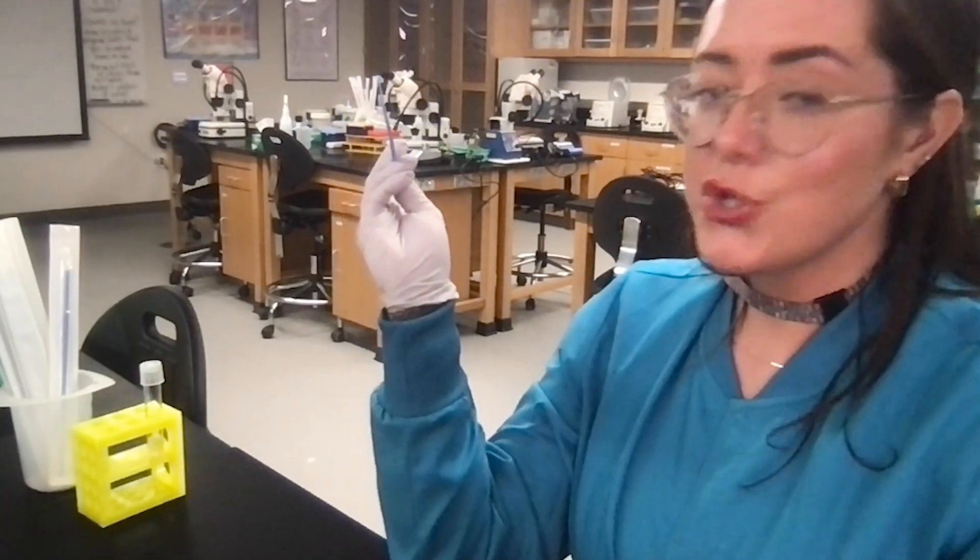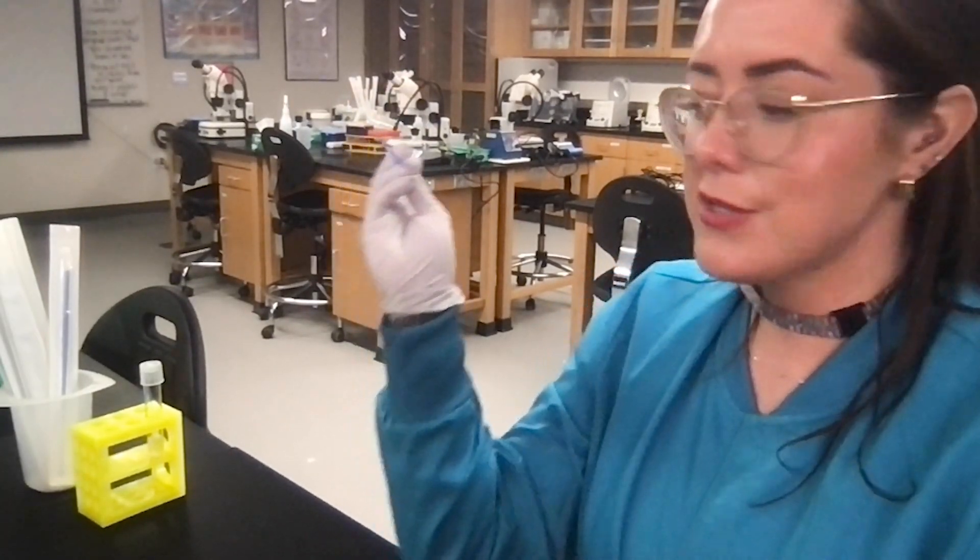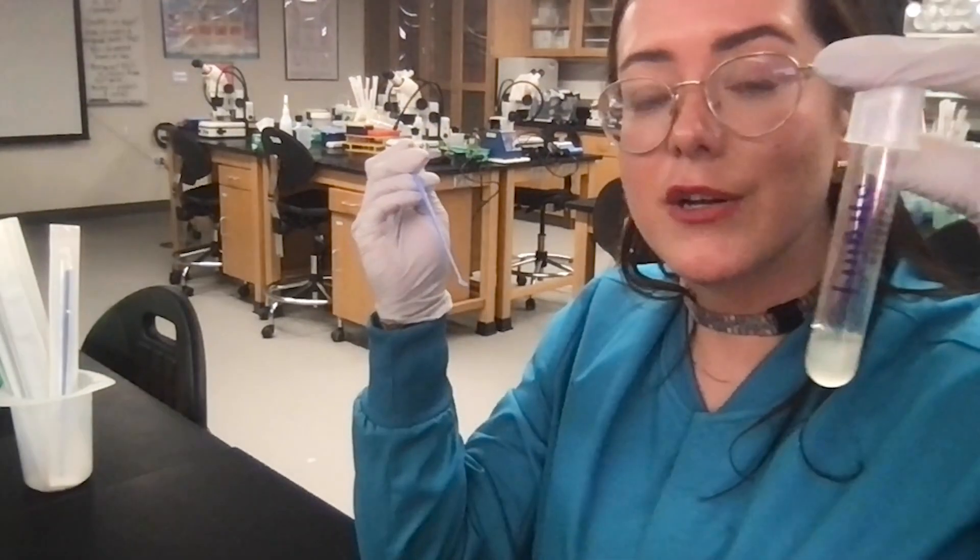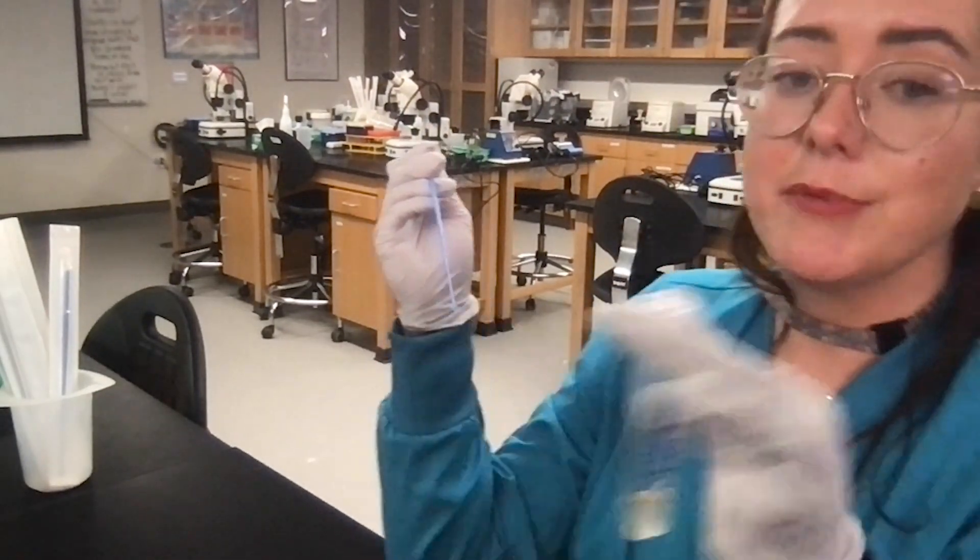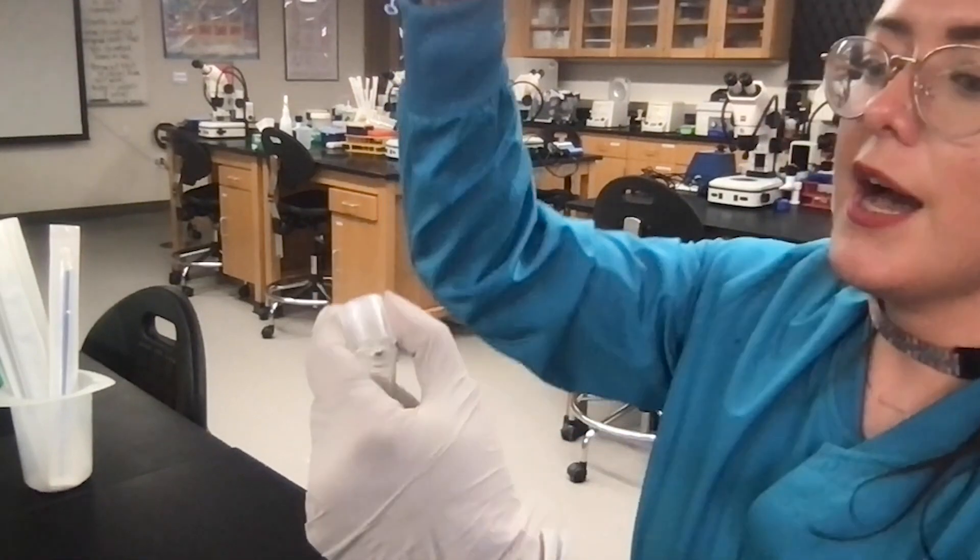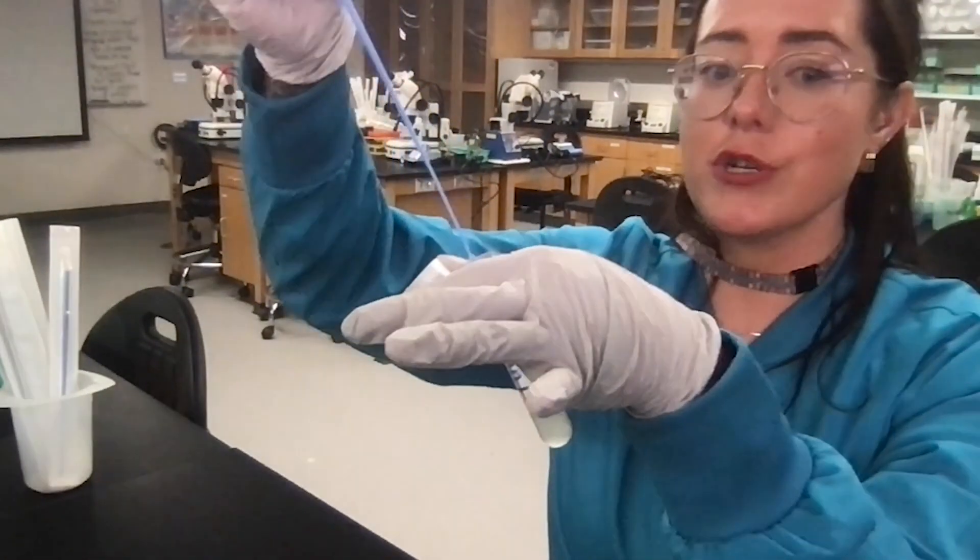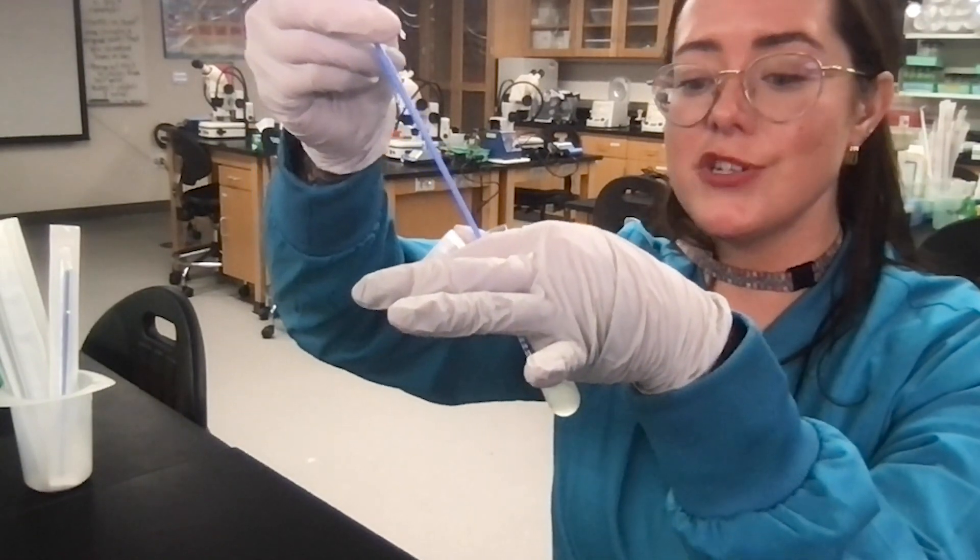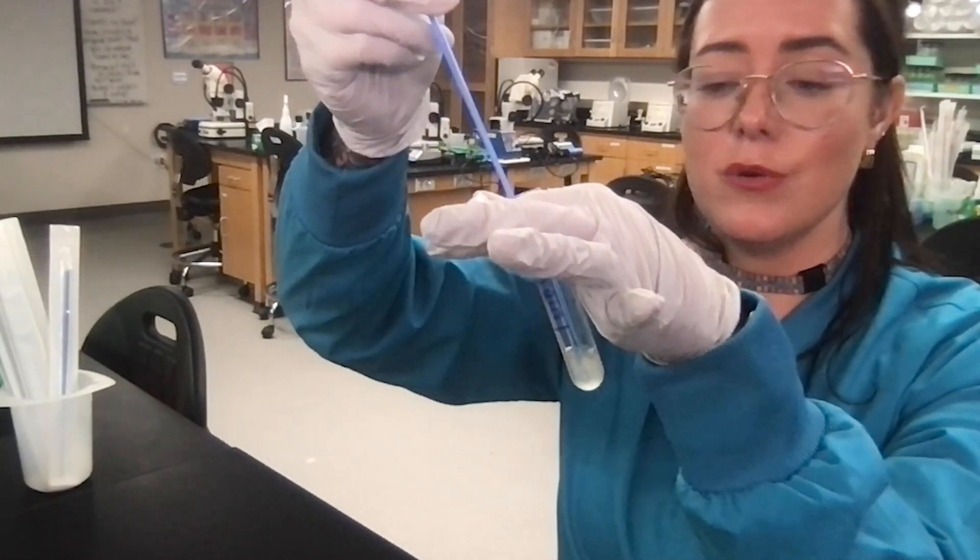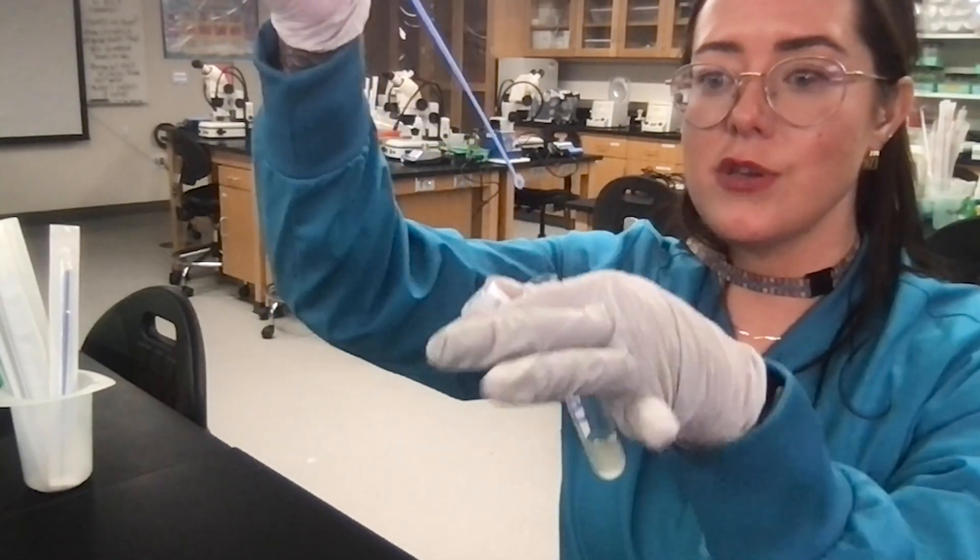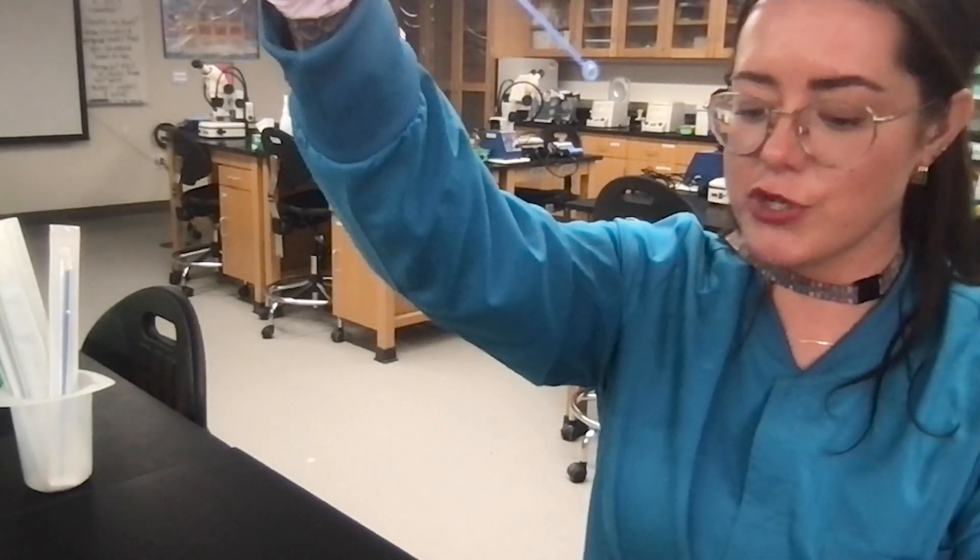You can also streak out liquid cultures onto agar plates. For example, I have an overnight culture of some E. coli. I'm just going to pop off the lid here. I'm going to just dip this inoculation loop right into the culture, being careful not to touch the sides of the tube. I just want to dip it right down into the liquid. So I have a little droplet there of that liquid culture.